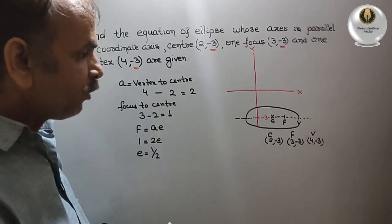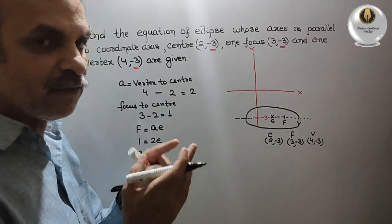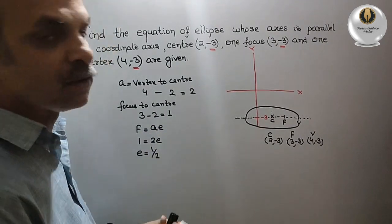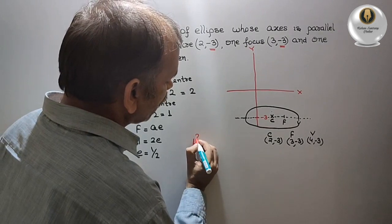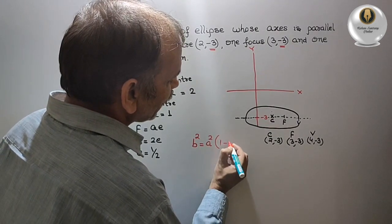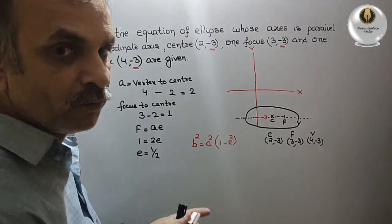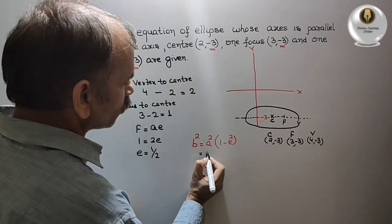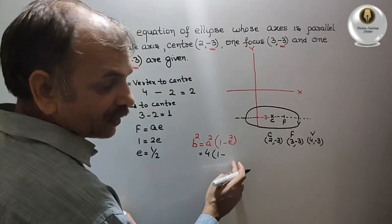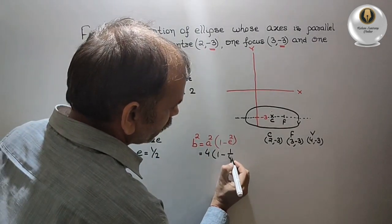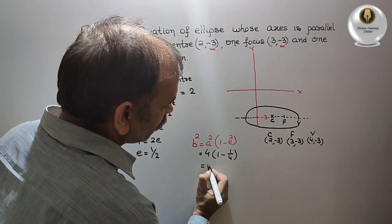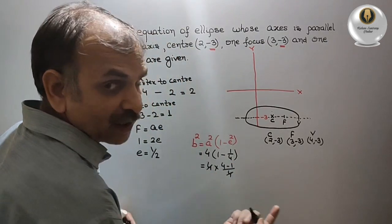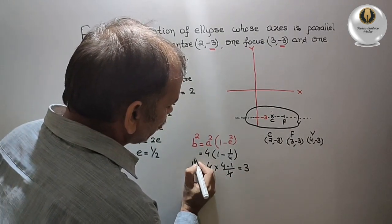Now we find B, the semi-minor axis. The formula is B² = A²(1 - E²). So B² = 4 × (1 - 1/4). Taking the LCM: 4 × (4 - 1)/4 = 4 × 3/4 = 3. So B² = 3.